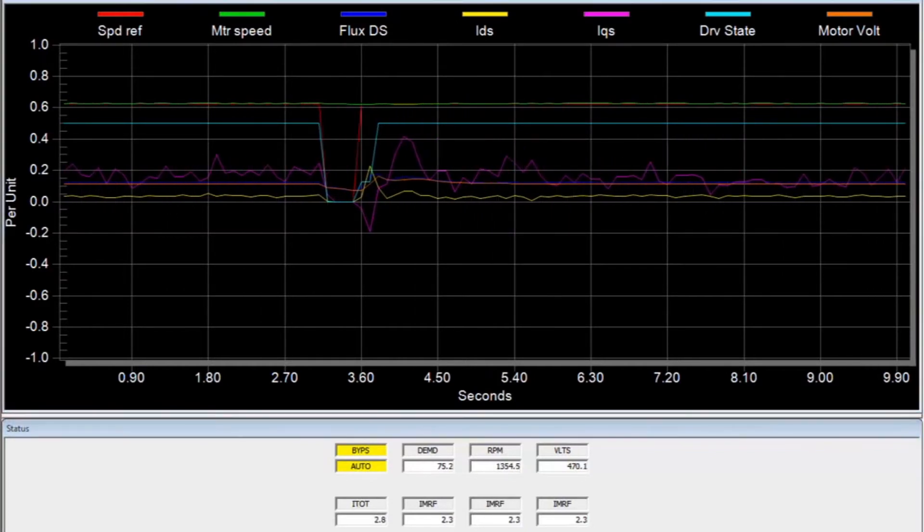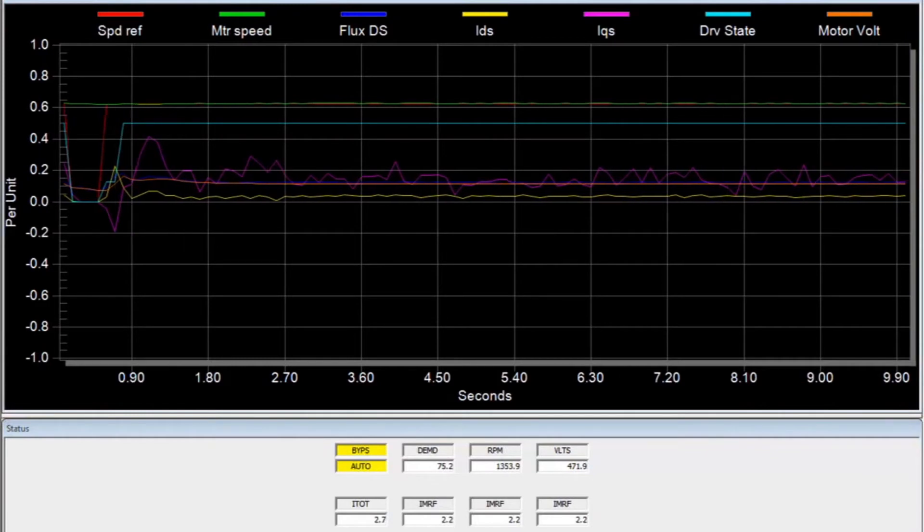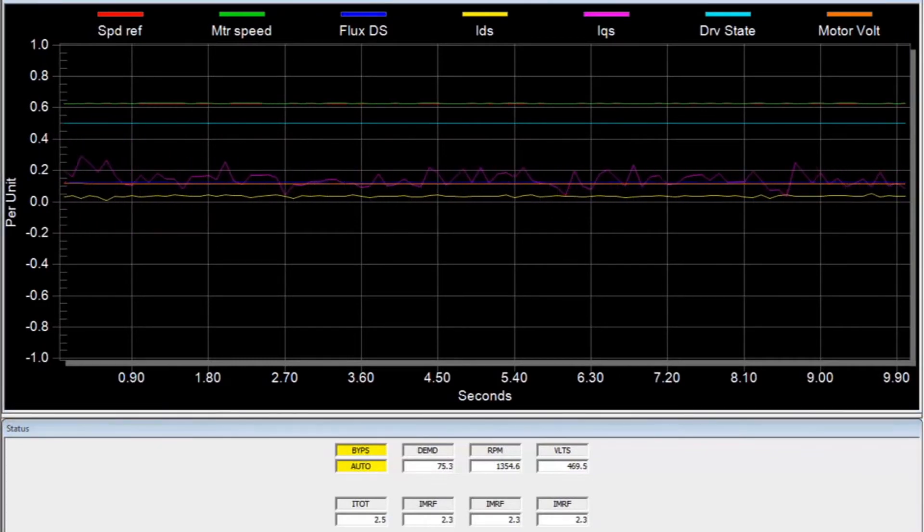Performance is uninterrupted as shown by the constant green motor speed line. In a period of 250 milliseconds, the drive is able to bypass the failed cell and continue to function.